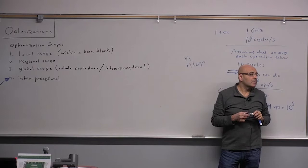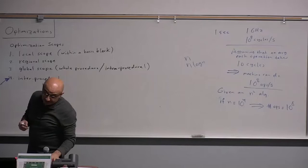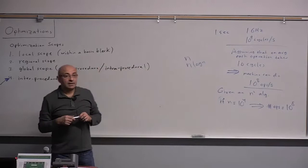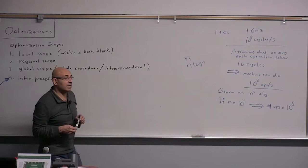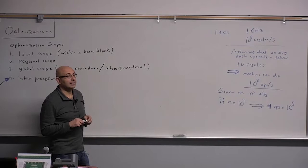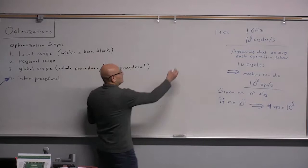What is the typical size of a basic block? It varies widely and depends on the nature of the program. What kinds of programs will have smaller basic blocks? Smaller basic blocks come from a lot of branching — if-else, loops, and a lot of conditional branch switch statements.